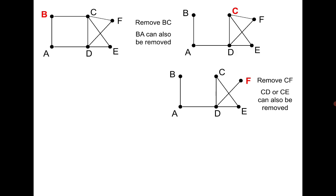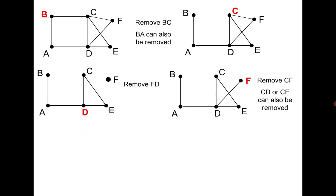From F there is only one option, so I must go to D. I reach D. Now from D there are three options: I can go to A, C, or E. But I should not go to A — if I go to A then from A I have to go to B and I will be stuck at B and cannot come back.